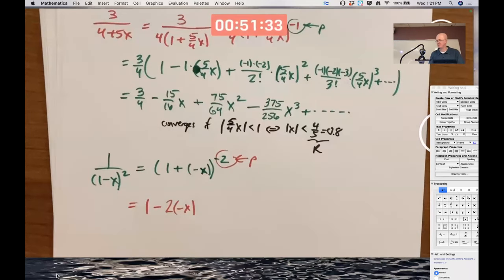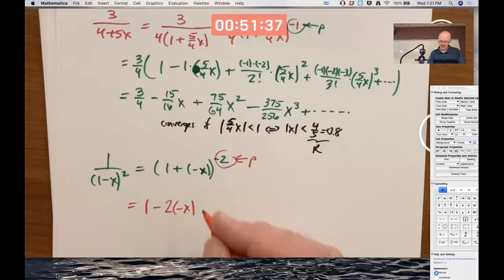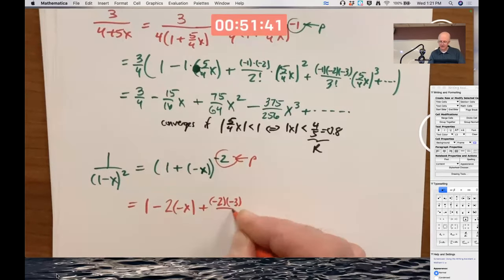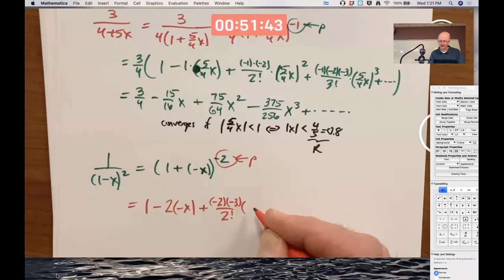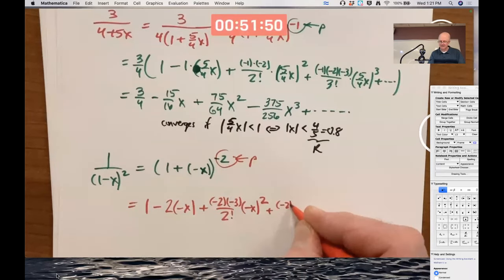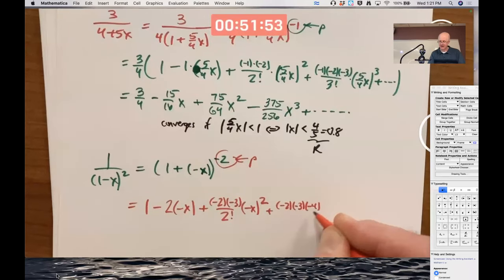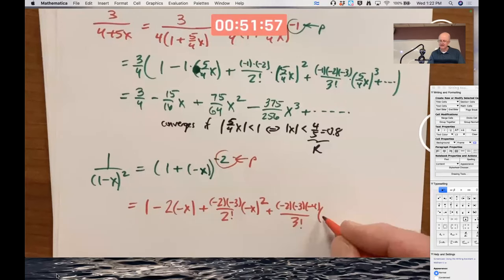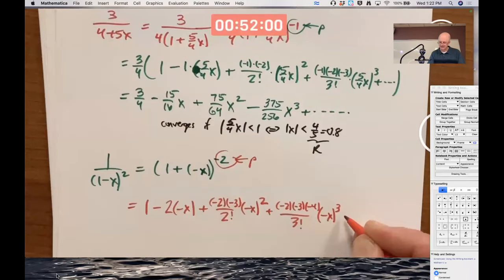Two minuses will make a plus. Plus p times p minus 1 over 2 factorial times the thing playing the role of x is negative x quantity squared. Plus p times p minus 1 times p minus 2 over 3 factorial times the thing playing the role of x quantity cubed, et cetera.